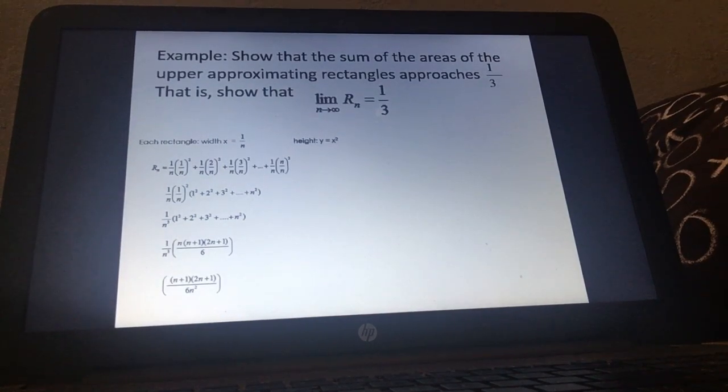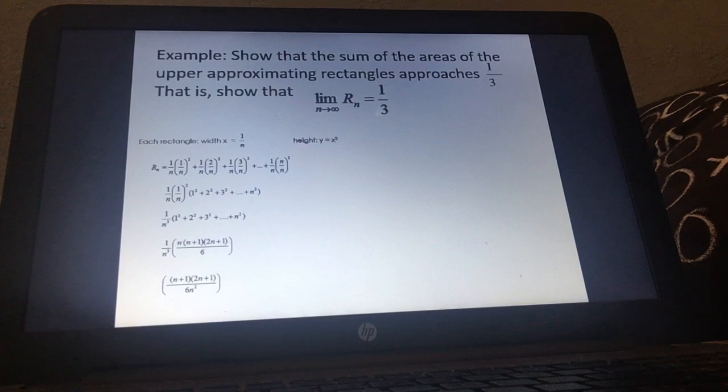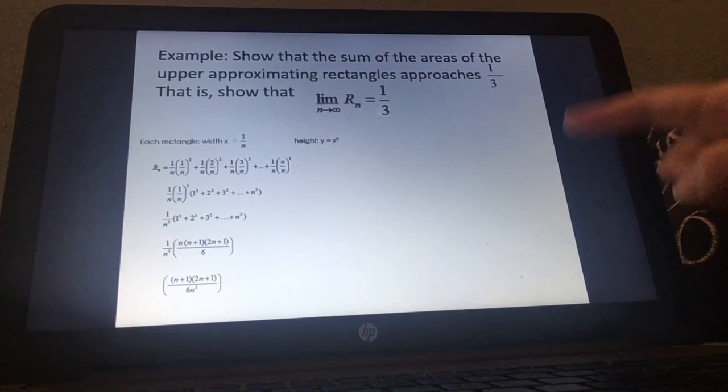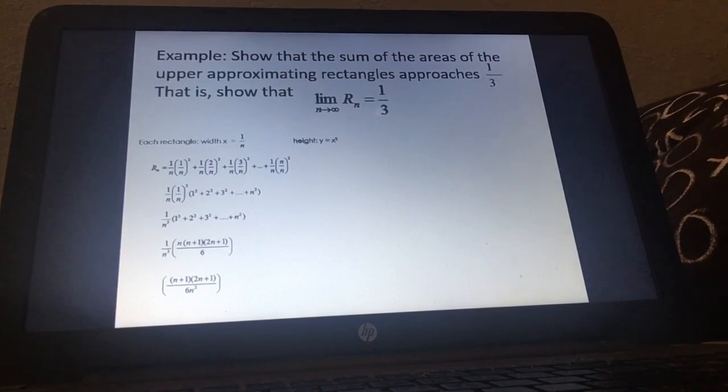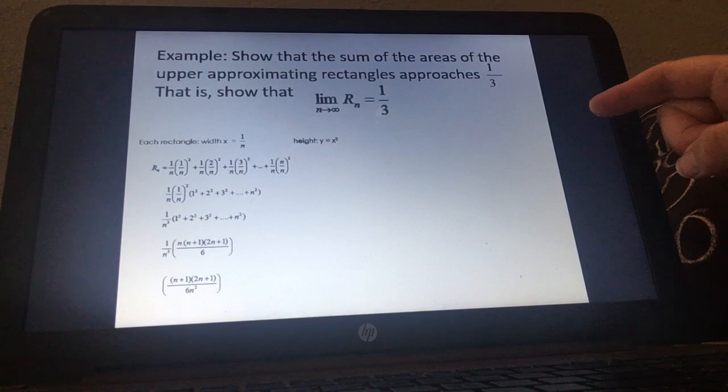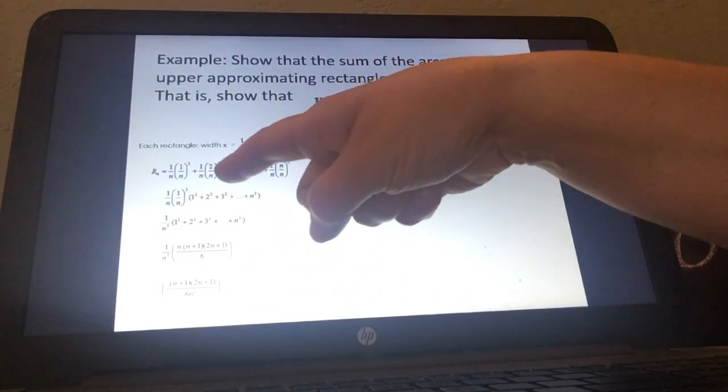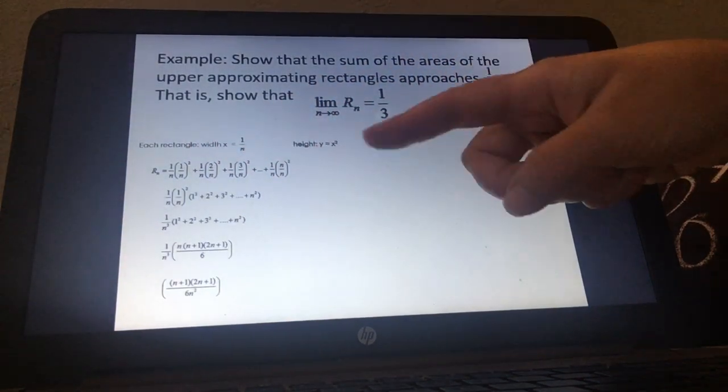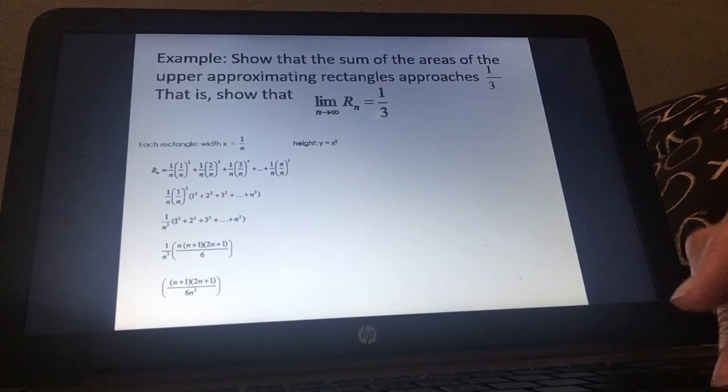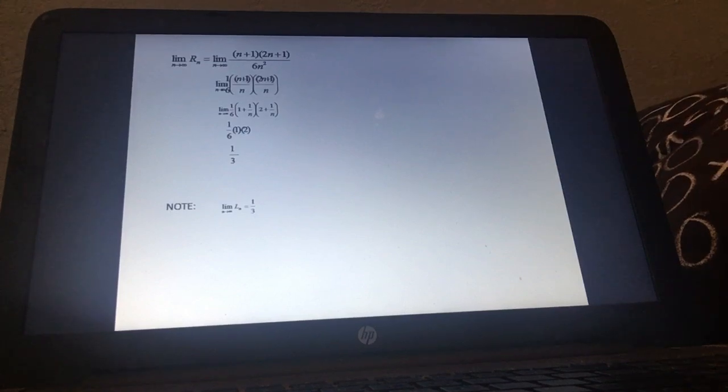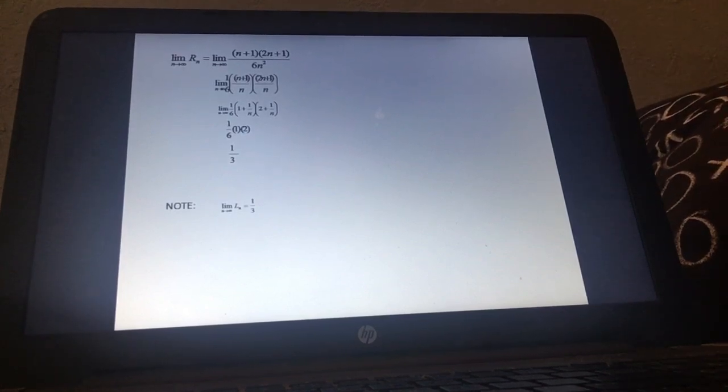Then if we keep going with this the example says show that the sum of the areas of the upper approximating rectangles approaches 1 third. Or that's a fancy way of saying show that the limit of n approaching infinity for the right side is equal to 1 third. And again I'm not going to go through all this. There's the formula again right. We do length times or width times height and I think if we fill it in the width is 1 over n. The height is x squared. So just 1 n times 1 n squared. 1 n times 2 over n squared and so on. So again I'll leave that work for you to go through because it shouldn't be that bad. If we take our knowledge of limits and apply it we do get that the limit is 1 third. And if we did the same thing and did the limit from the left hand side we'd also get 1 third. So that's a lot of information we'll let you read through those steps.